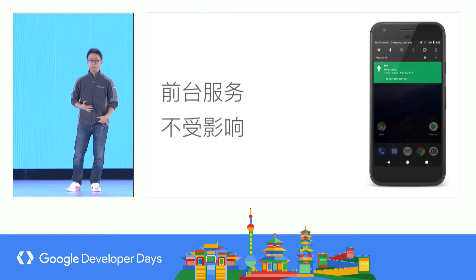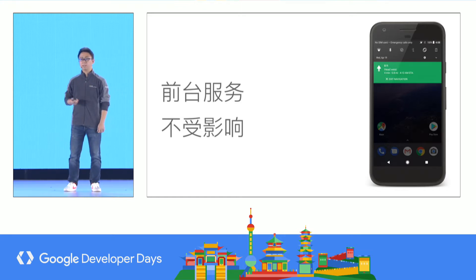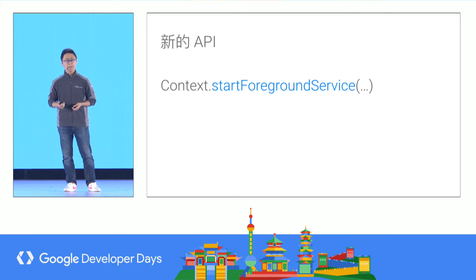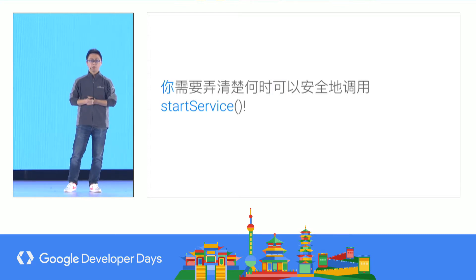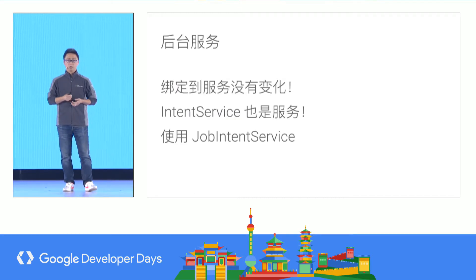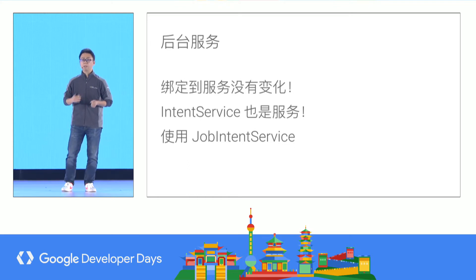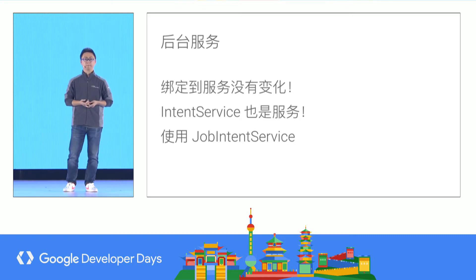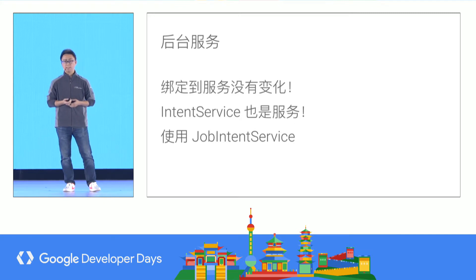For foreground services, they do not have such a background limitation, but they should have a continuous notification so users are aware of the action. The old way of starting a foreground service from the background will no longer work. So there is a new API: a service can be started in the background and then promoted to foreground using startForegroundService. As a developer, you should design your application so that when it is visible in the foreground, you call startService. These changes only apply to started services; bound services won't have this limitation. When your application is in the foreground and bound to another service, that other service will also be at the foreground.